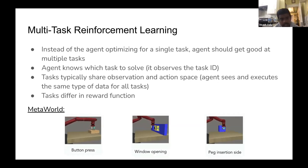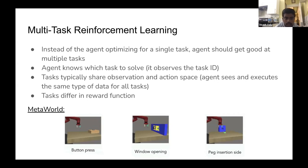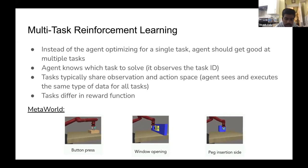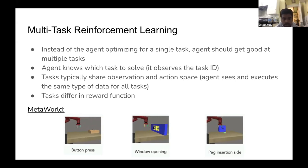What's multitask reinforcement learning? It's very similar to normal reinforcement learning, except instead of the agent optimizing for a single task, the agent is trying to get good at multiple tasks. The agent knows which task it has to solve — it has a task ID as part of the observation. Typically the tasks share the observation and action space, so the same dimensional vector represents the same kind of information, and it executes the same type of action.